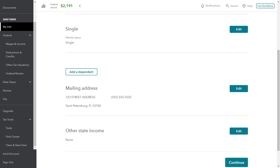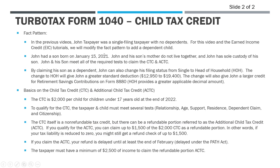For those of you who have seen the previous videos for John Taxpayer, we have to modify the fact pattern a bit for this one. In all the previous videos as part of this playlist, John was just a single-filing taxpayer with no dependents. But what if we change the facts a little bit and John did have a son and could claim him as a dependent? How does that impact his ability to claim not only the child tax credit but also the earned income tax credit?